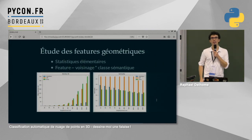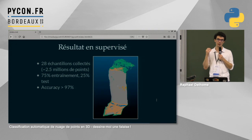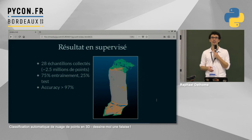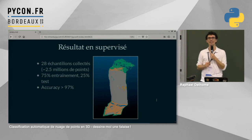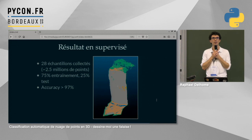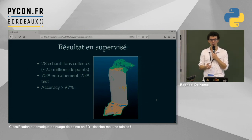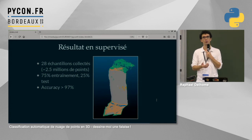On n'a pas calculé les métriques en détail. Au départ très naïvement, sans jeu de test, on avait des 99,8 et 99,9 % — clairement il y avait un loup. Maintenant on est plus confiants mais il faudrait se pencher sur le recall, l'accuracy et la précision pour être vraiment sûrs des résultats. En l'état actuel, on est vraiment à un stade de preuve de concept : on arrive à faire des choses, mais c'est à nous de jouer pour les dernières semaines du projet.